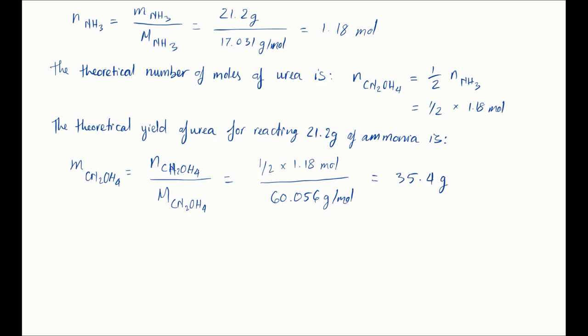So this 35.4 grams is what you should get if all of your ammonia reacted and went into the production of urea perfectly. And also assume that you were able to purify and collect all the product without missing anything.